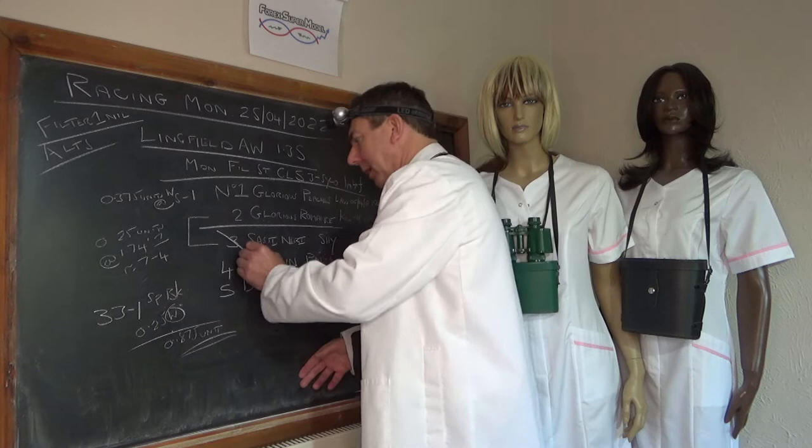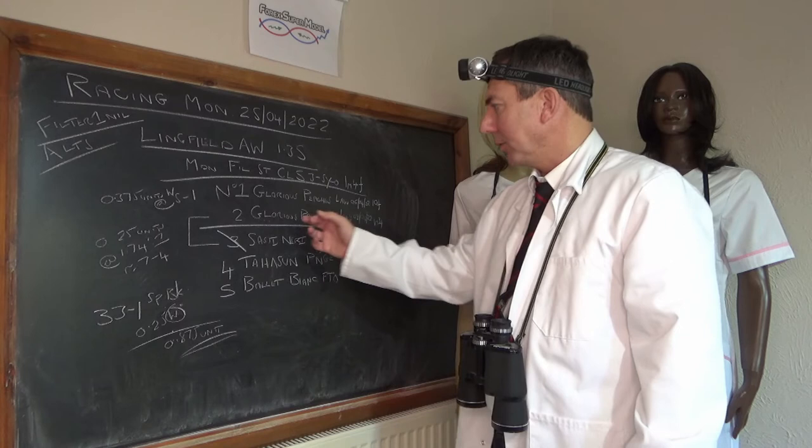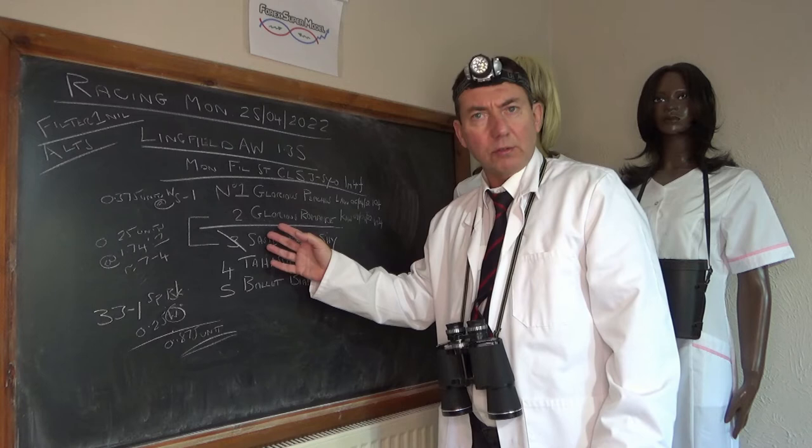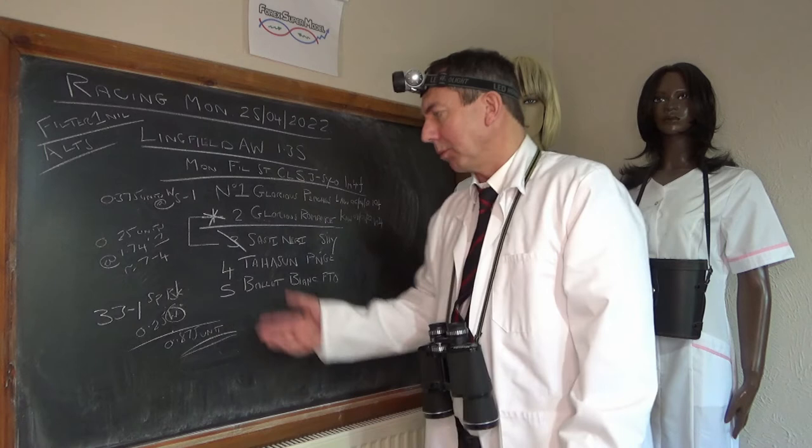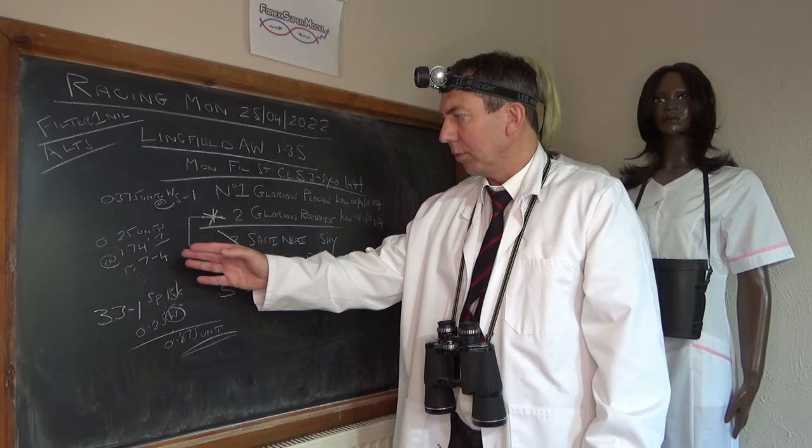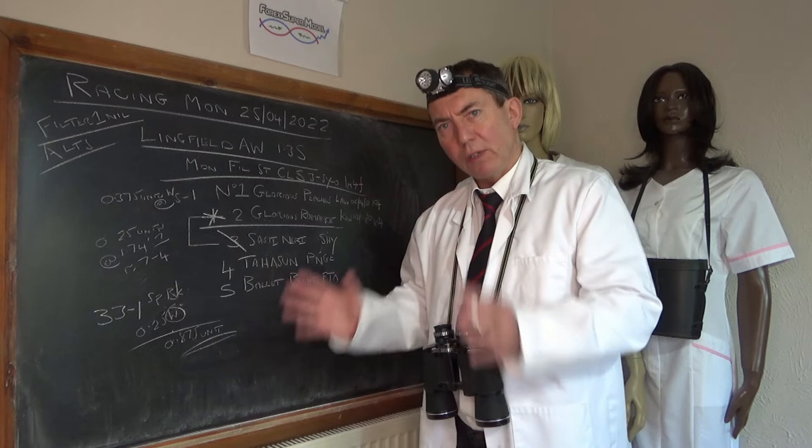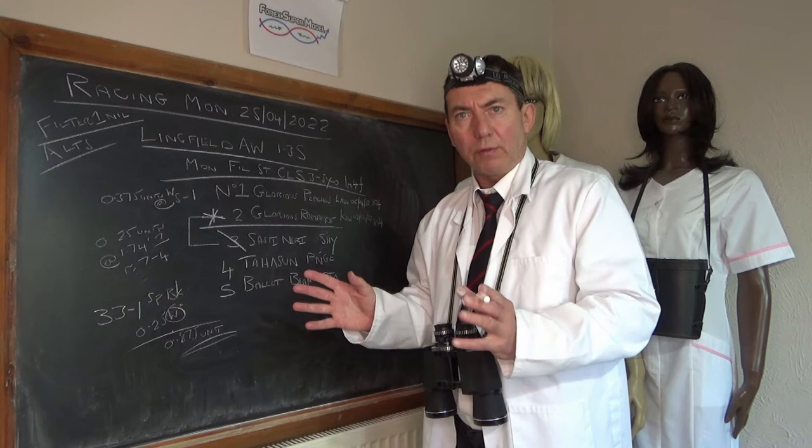In the same race you've got this Glorious Romance. That was its first run and it was held up at the back and was just given a little bit of an educational ride and it's now ready to go. So that's one of ours, Glorious Romance, and that's probably the second favourite. We've got a quarter of a unit, 0.25 on at 1.74, roughly 7 to 4 odds and that's really just our baseline result. We're going to lever off that for the other two which we'll talk about in a minute.